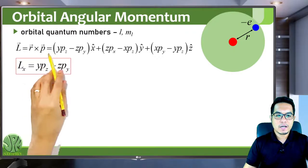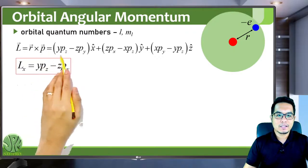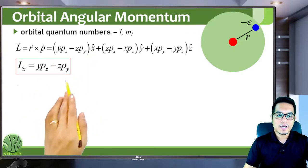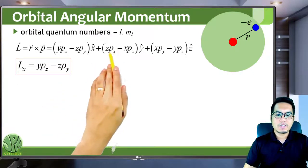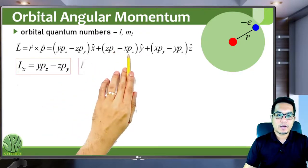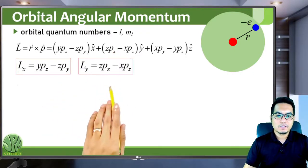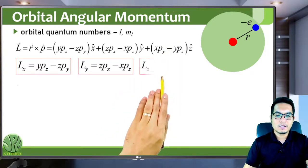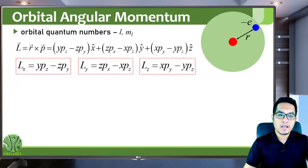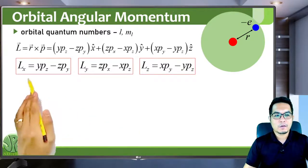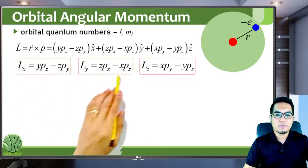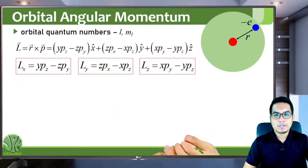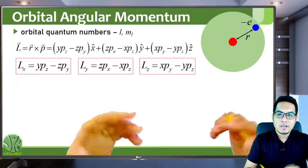The term with the x-hat vector is the x-component, the next term is the y-component, and the last term is the z-component of the orbital angular momentum. So we have three components: Lx, Ly, and Lz. In our previous chapters, we discussed the commutation relation of position and momentum, specifically x and px, the x-component in one dimension.